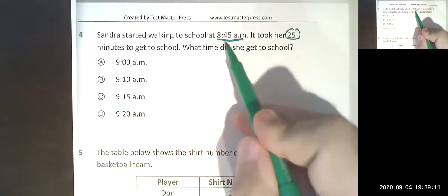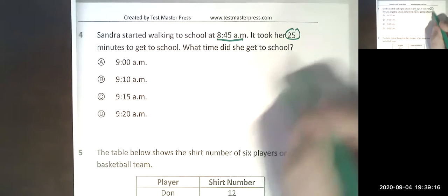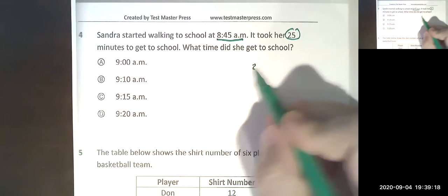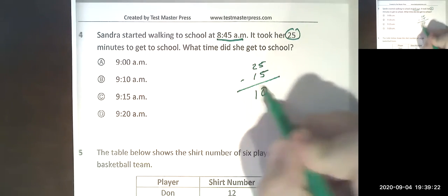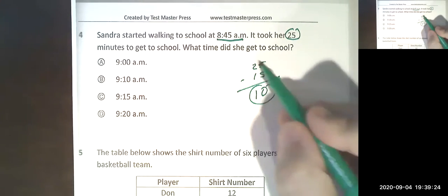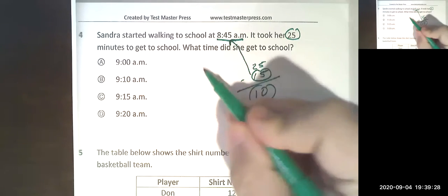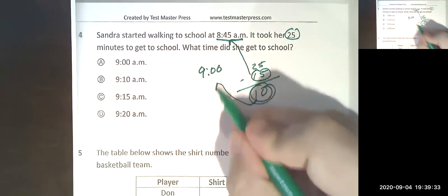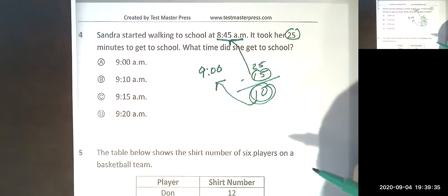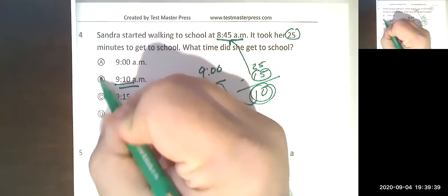We have to figure out 25 and 8:45. Now I know from the clock if I add 15 more minutes to 45 that would get me to nine o'clock. So 15 more, 25 minus 15 more would still leave 10 minutes left. So 15 minutes onto this 8:45 would get me to nine o'clock, so now I still have 10 minutes left, so I have to add that to nine o'clock.